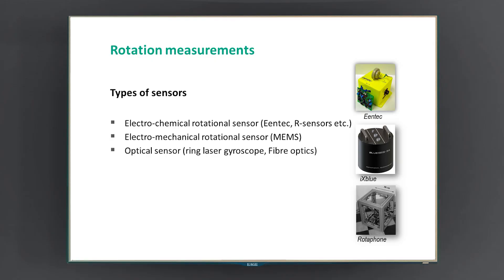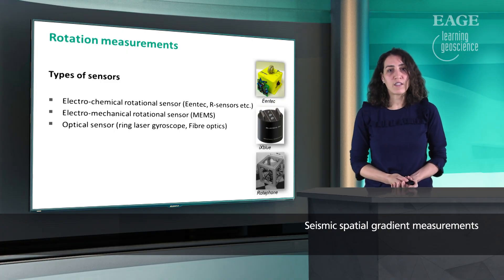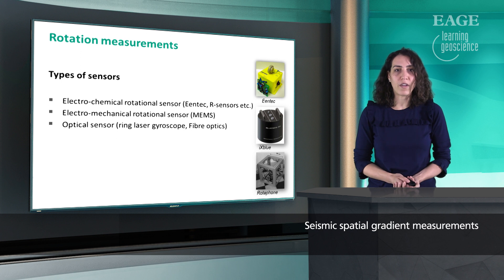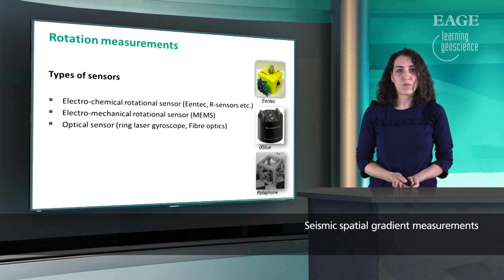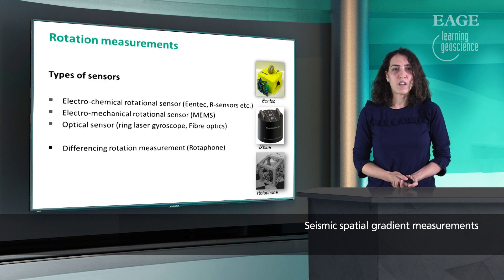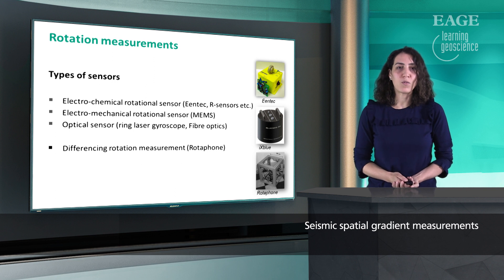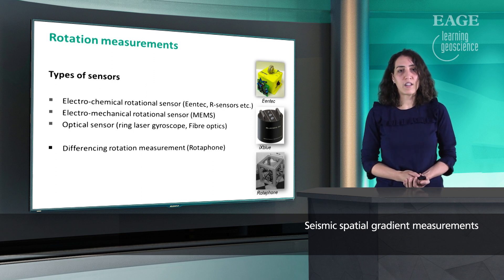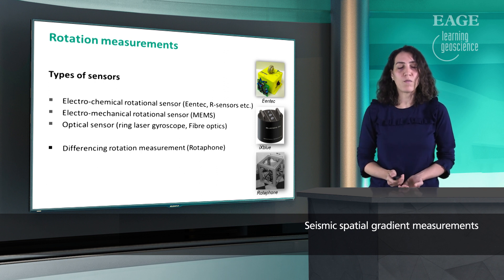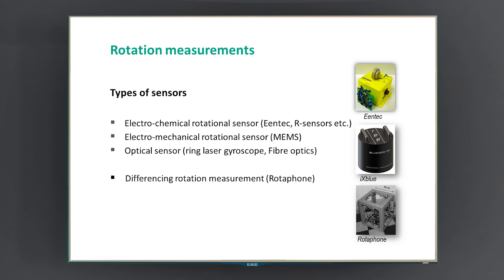There are already many rotational sensors based on different physical principles. For example, the electrochemical rotational sensor measures the current induced by the flow of an iron-rich fluid triggered by rotation, whereas the ring laser gyroscope measures an optical effect whereby light traveling in opposite directions experiences a time shift. However, these rotational sensors are not suitable for large-scale seismic experiments, and therefore it is more feasible to acquire a gradient measurement by taking the difference between two closely spaced conventional geophones. An example of that is the rotaphone, which you can see in the picture.